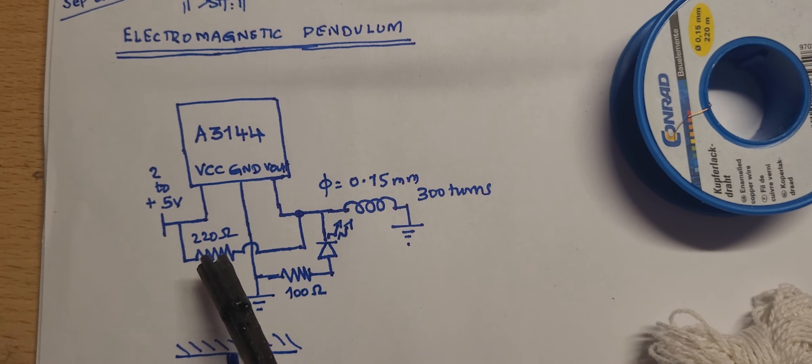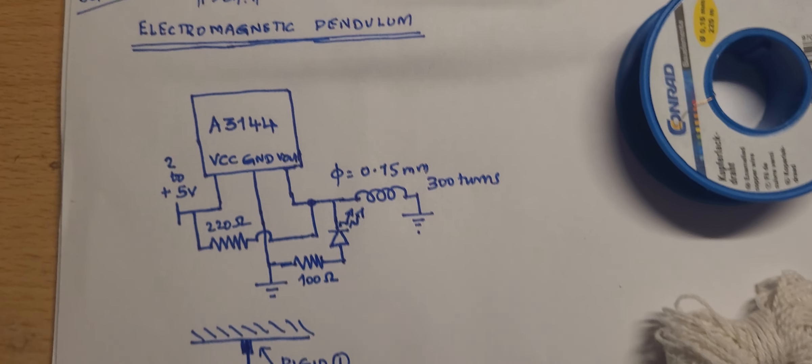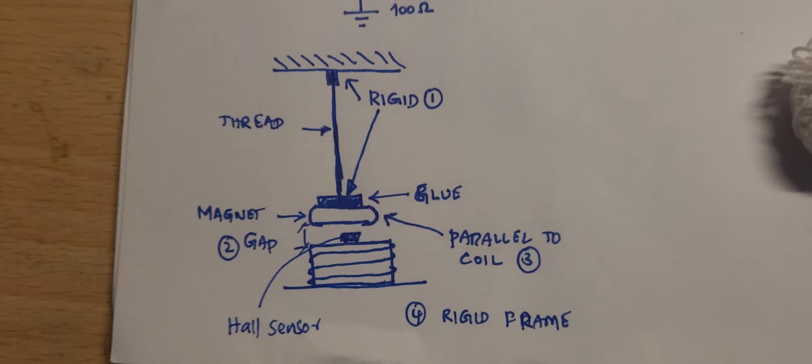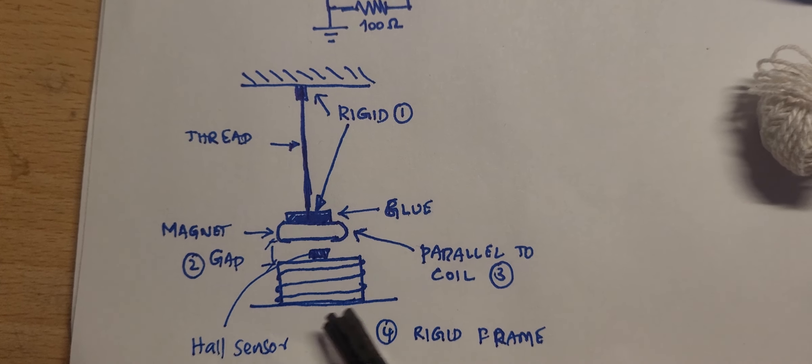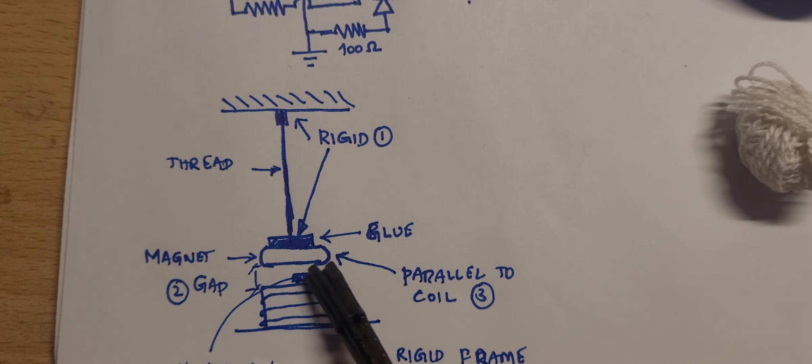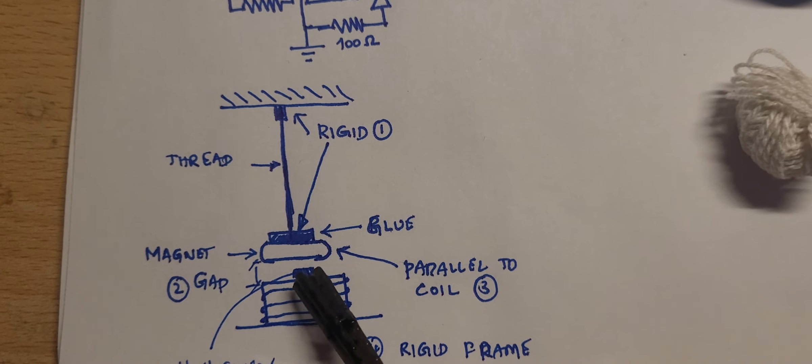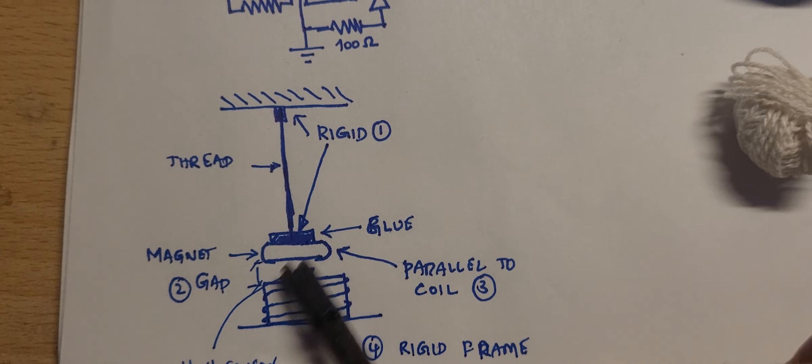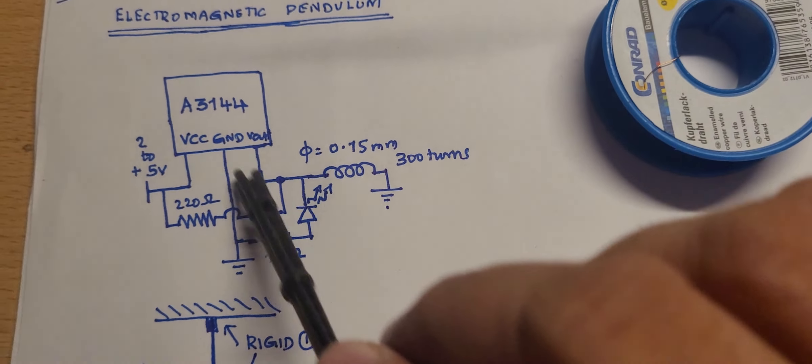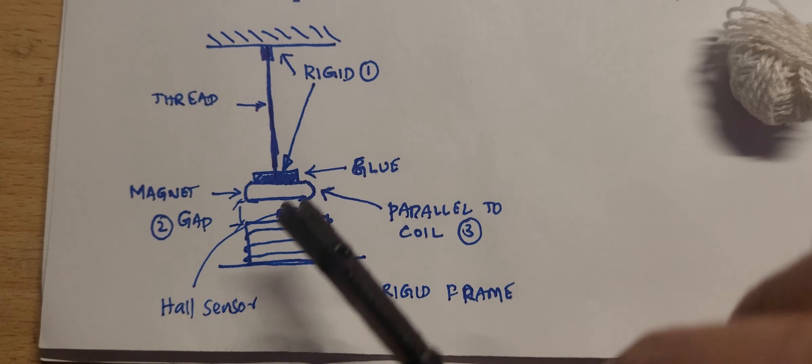Since this hall sensor has an open collector emitter, it's connected between collector and emitter with a 220 ohm resistor. How this works is once the permanent magnet passes through the coil, this A3144 sensor detects the magnetic field and it turns on this coil.